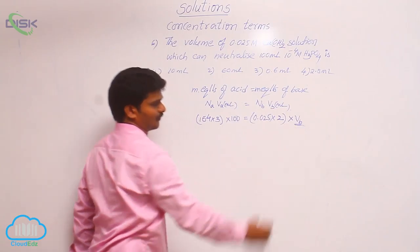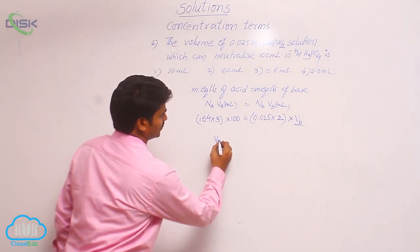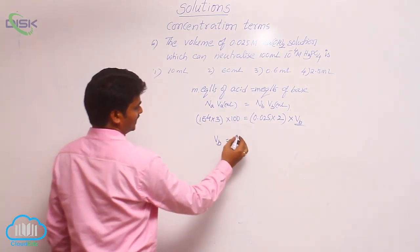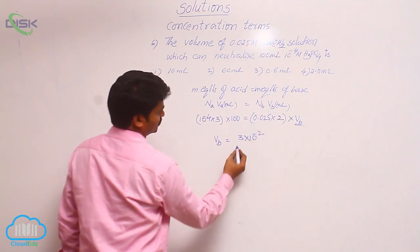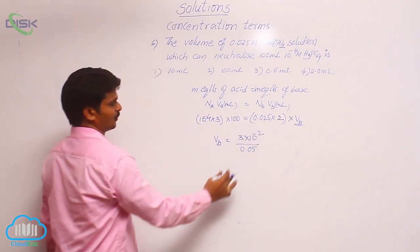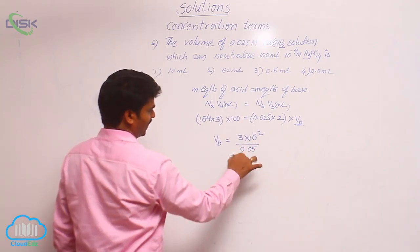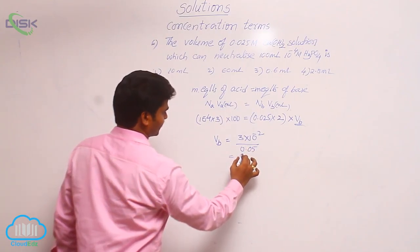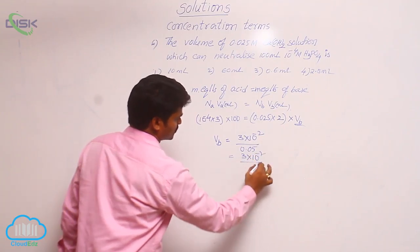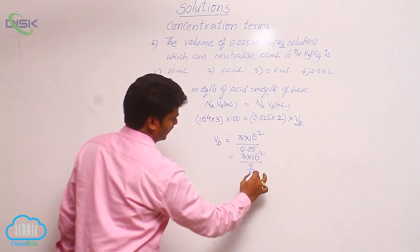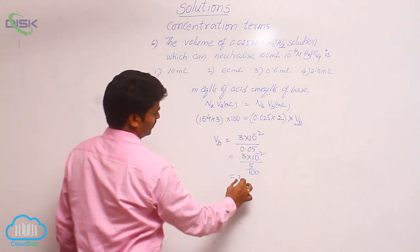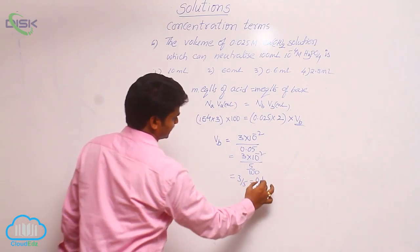This is the term we have to find out. Here, volume of base equals to 100 into 10 power minus 4 means 3 into 10 power minus 2 divided by its value 0.05. 0.05 means 5 by 100. That means 3 into 10 power minus 2 by 5 by 100. What is the value? 100 means 10 square, that means 3 by 5. 3 by 5 means 0.6 ml.